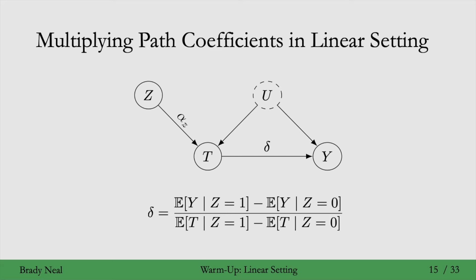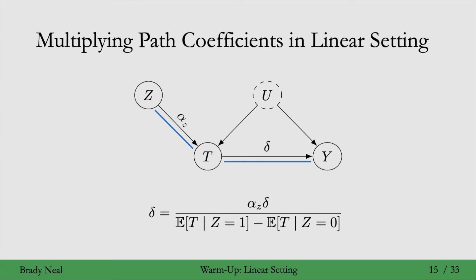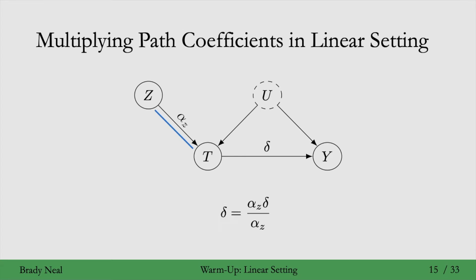Looking at the numerator of the identifying equation for delta: in the numerator we have the causal effect of z on y. We can see that graphically as the path z to t to y. To get that, we multiply the alpha sub z coefficient times delta. And then similarly, the denominator is the causal effect of z on t. We do that by just looking at the edge from z to t. Because this path consists of just one edge, this causal effect of z on t in the denominator just turns into that coefficient on that edge. And then the alpha sub z's cancel out to give us delta.